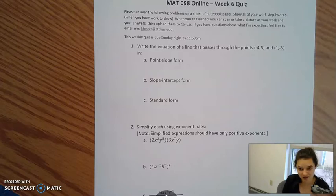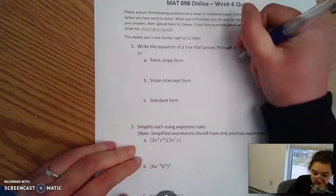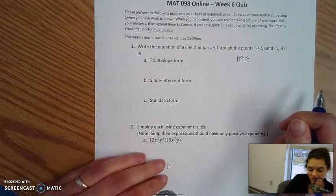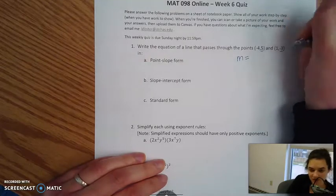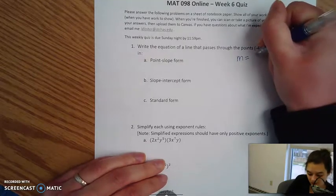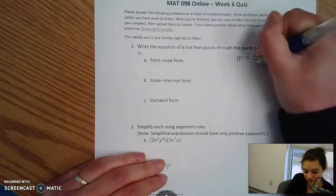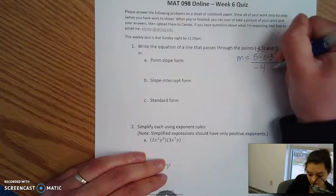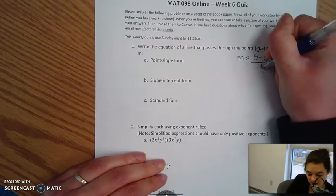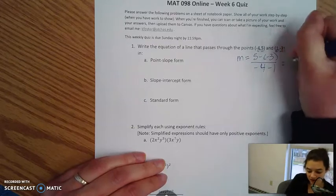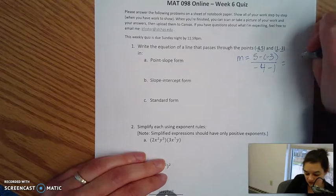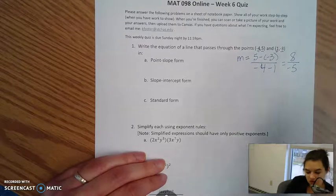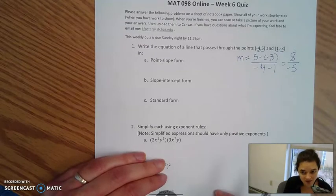To do really anything, we're going to need to get slope first. Remember that slope is rise over run, so it's change in y over change in x. Our y coordinates are 5 and negative 3, so change in y would be 5 minus negative 3, over change in x — that's negative 4 and 1, so negative 4 minus 1. 5 minus negative 3 is the same thing as 5 plus 3, which is 8. Negative 4 minus 1 is negative 5, so our slope is 8 over negative 5, or negative 8 fifths.